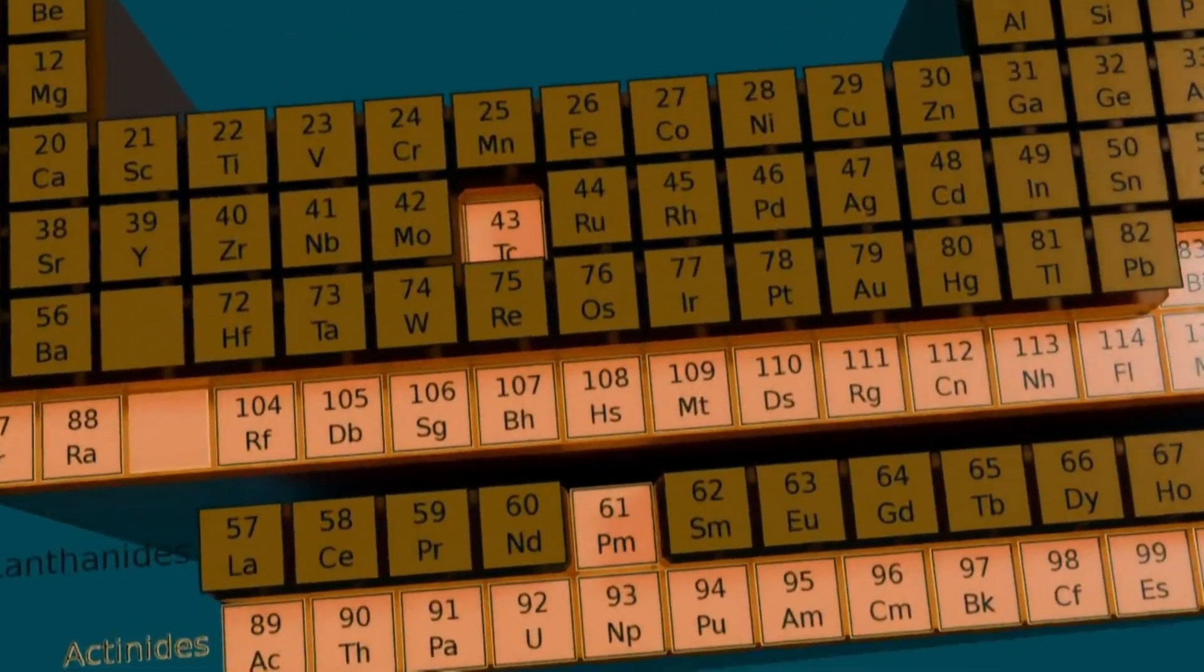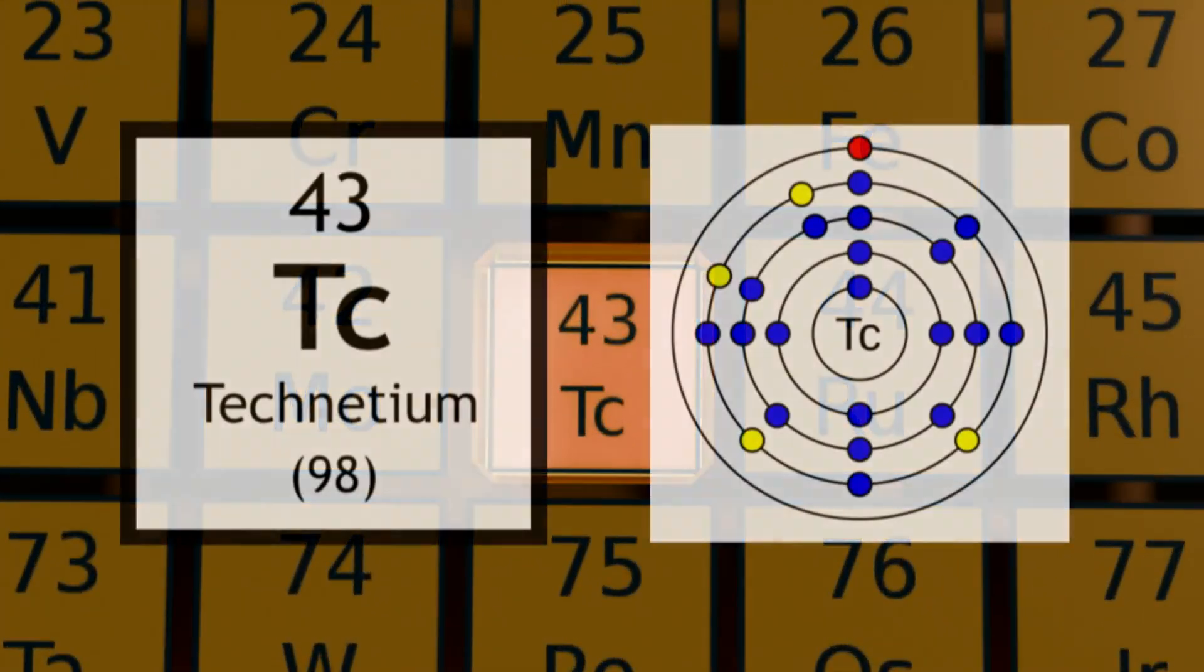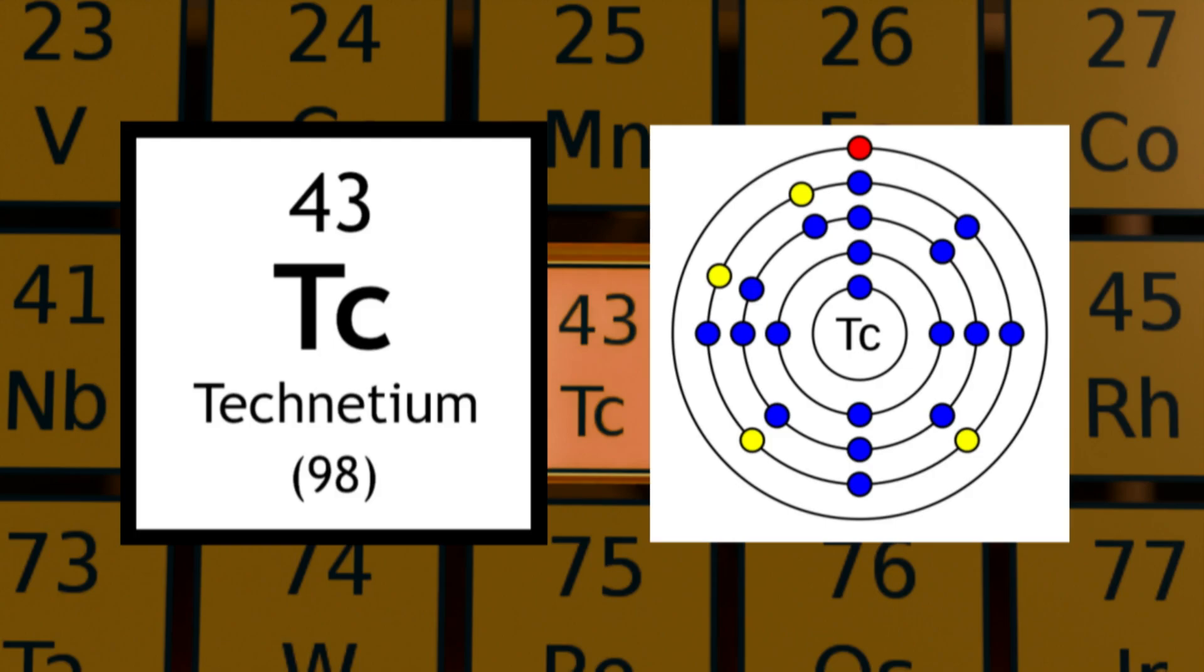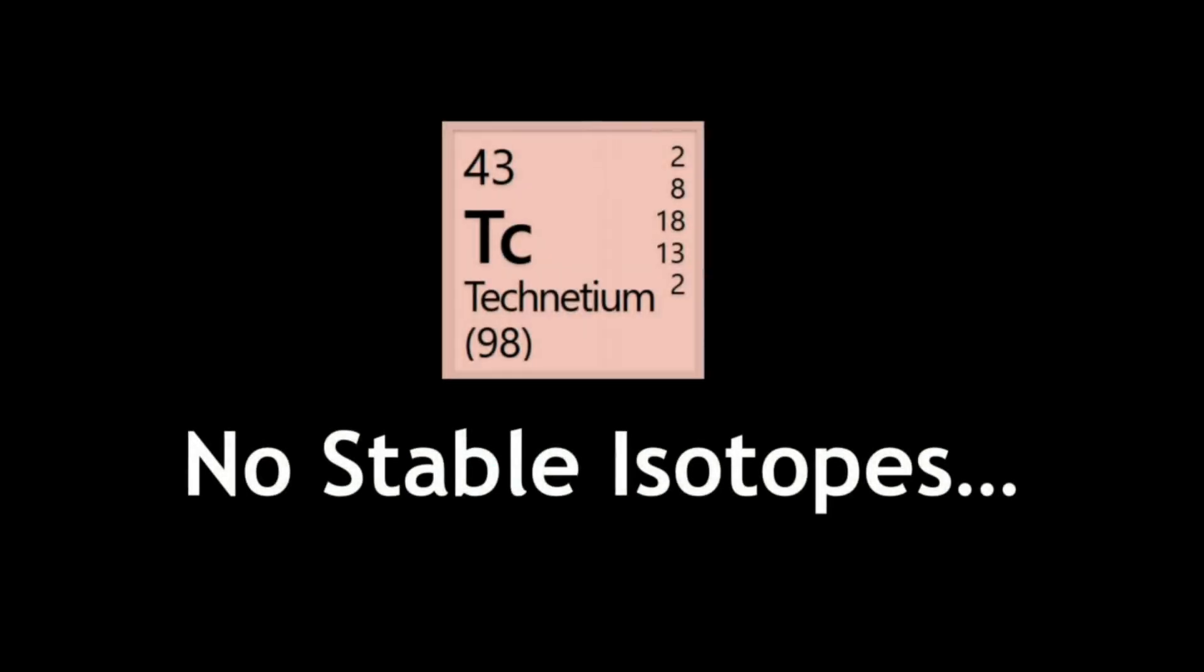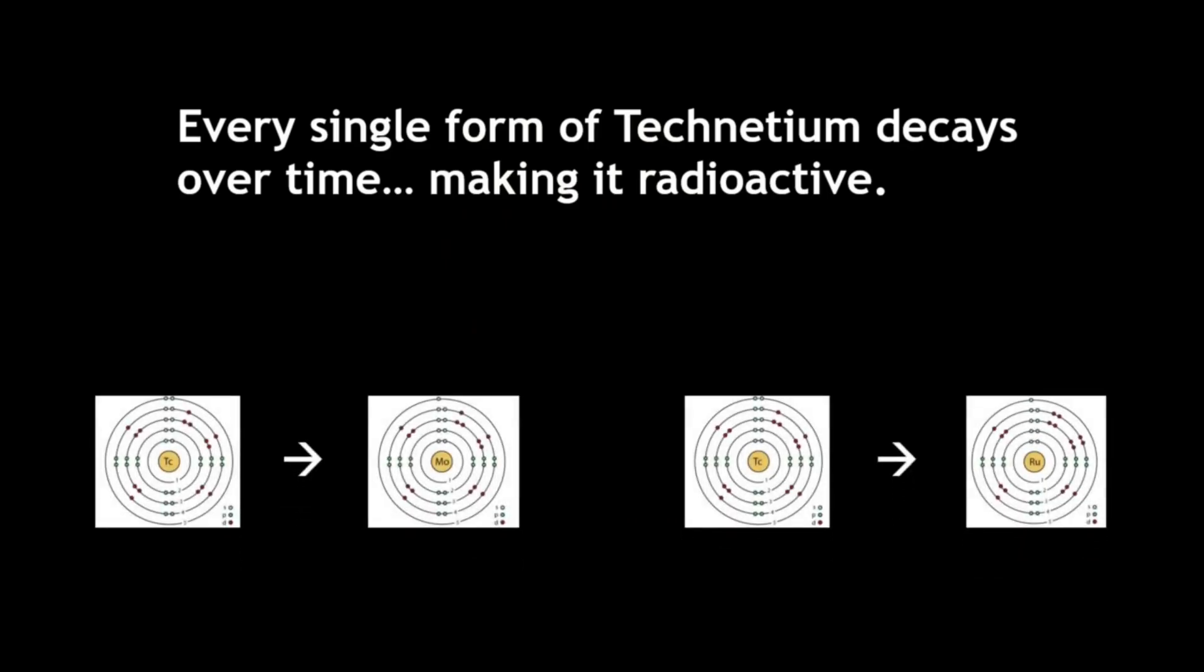There's a hole in the periodic table, and it's technetium. Technetium is the 43rd element in the periodic table, but has an incredible quality. It has no stable isotopes, meaning that every existing form of technetium decays over time, making it radioactive.